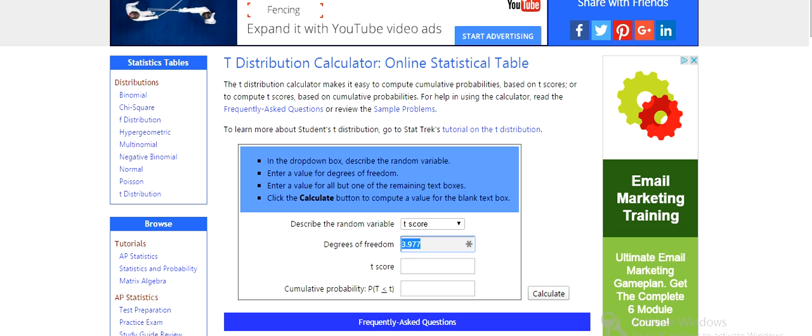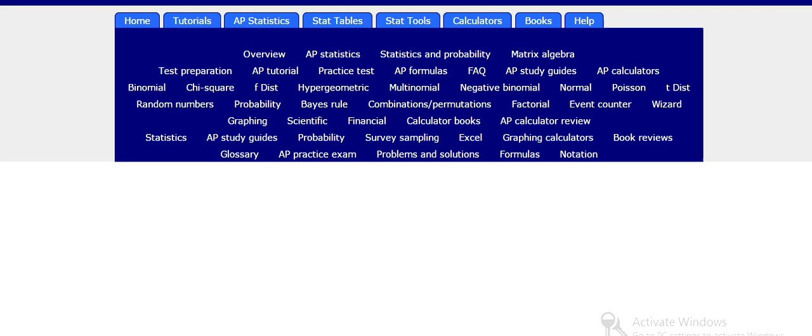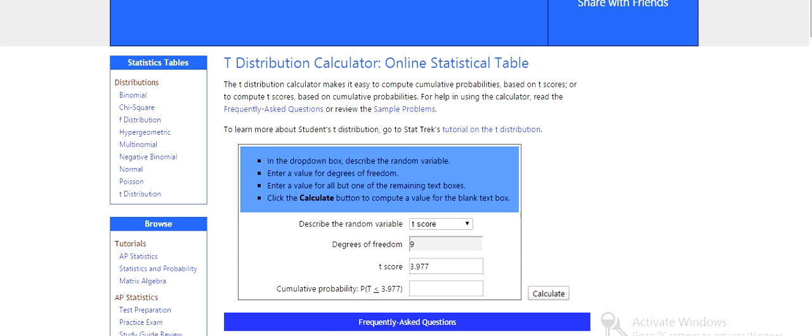df is 9, t is 3.977, and that gives us probability. That's going to calculate.